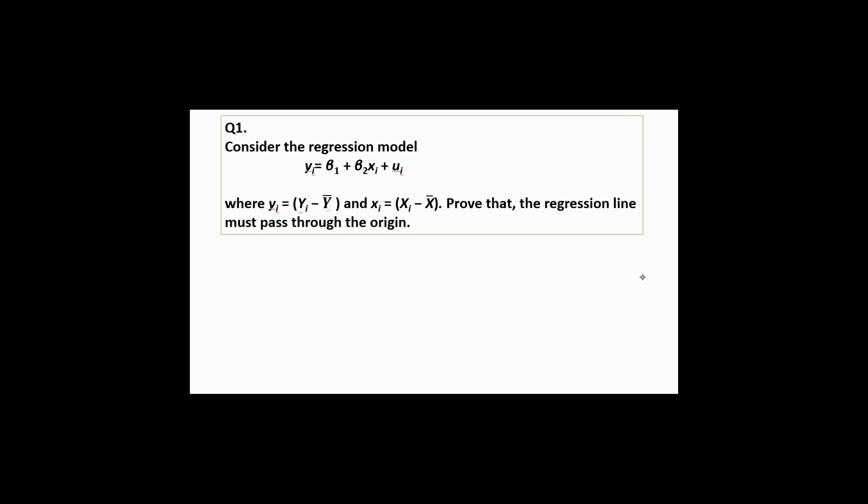Okay, so let's start solving it. If the regression line is passing through the origin, that means you don't have any intercept, right? So if you draw this line, then you can see here